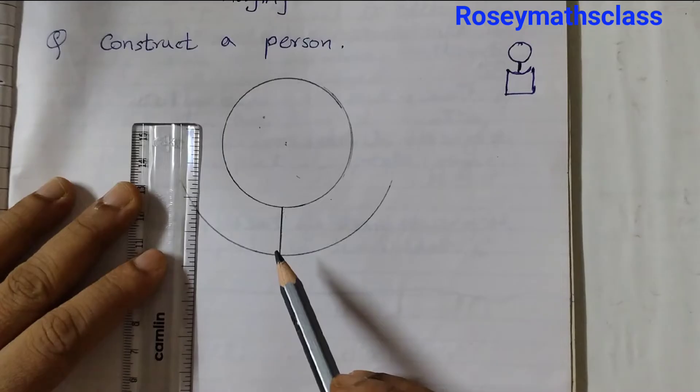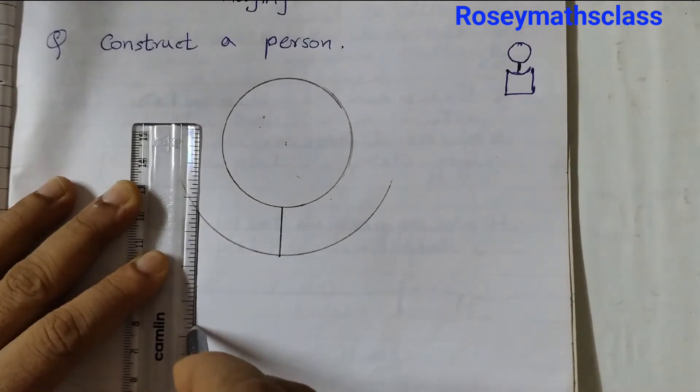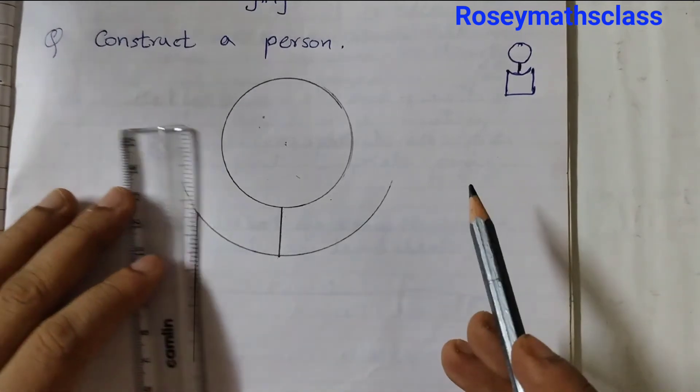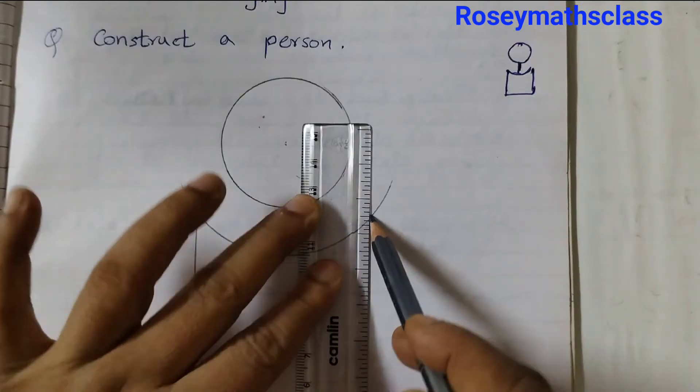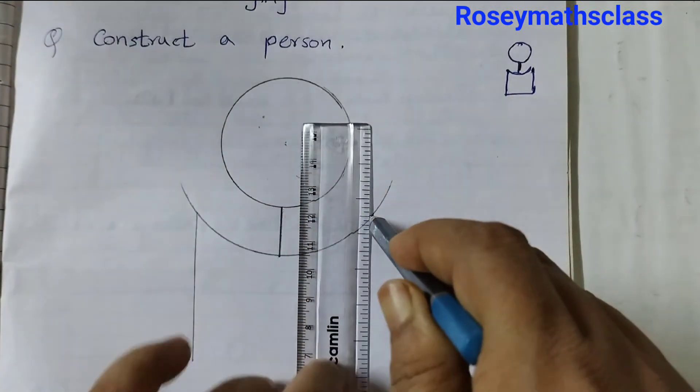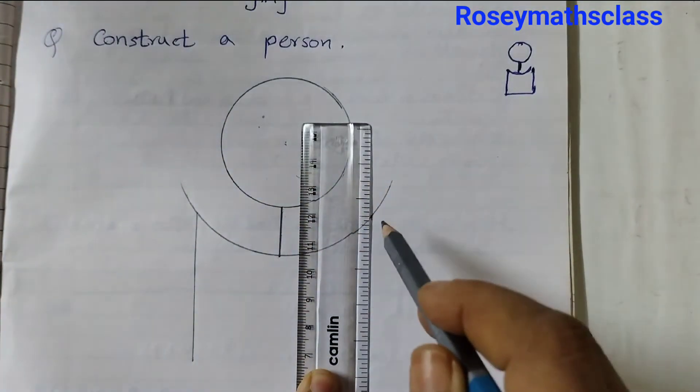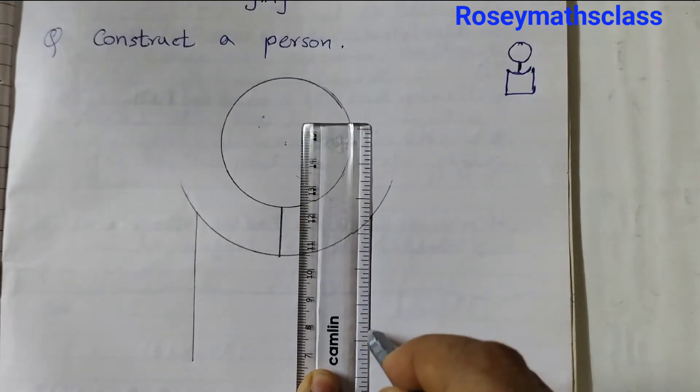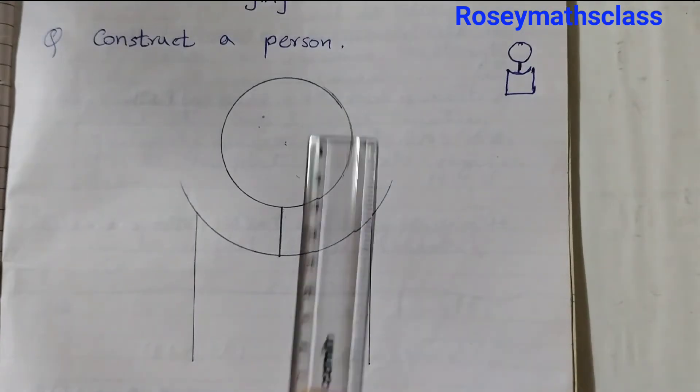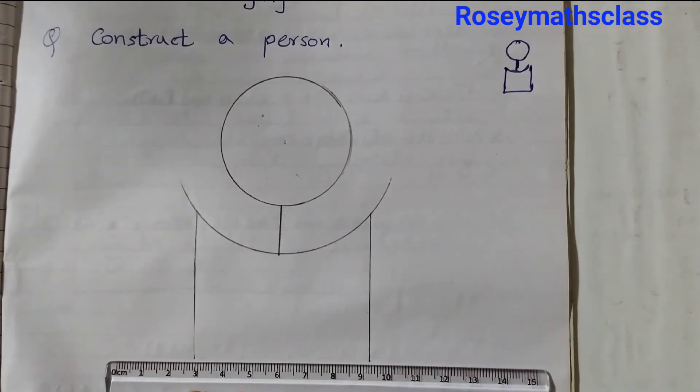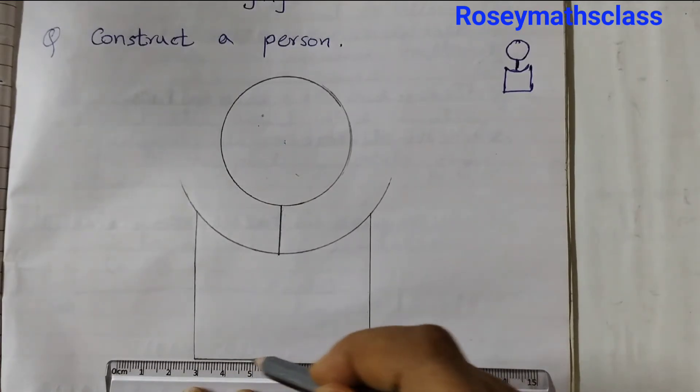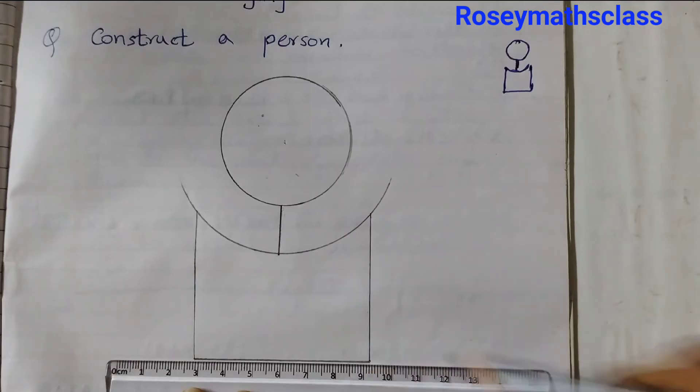Let's say I take this much distance and go till here. Similarly on the other side, take the same distance and draw a line, and then join these two points.